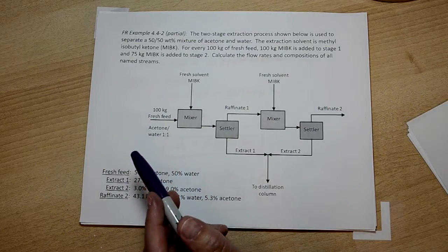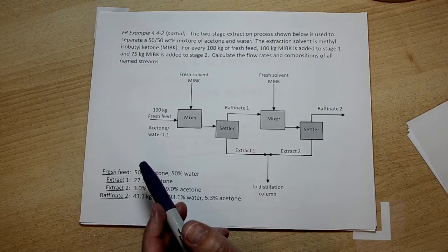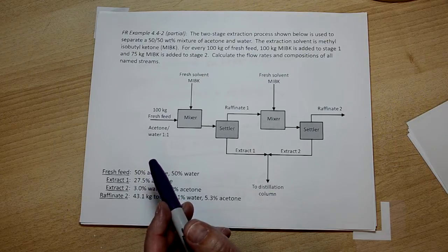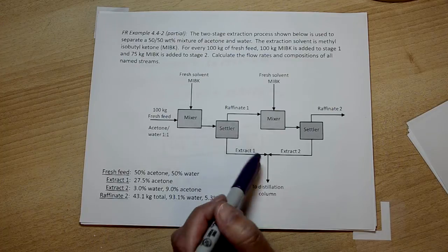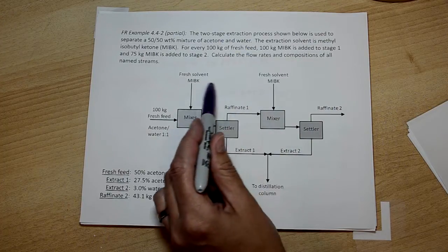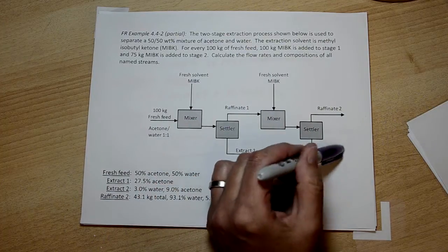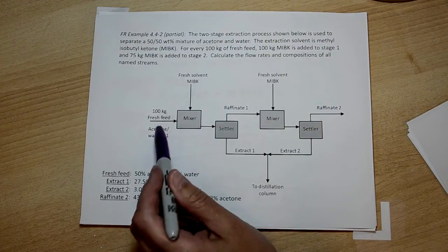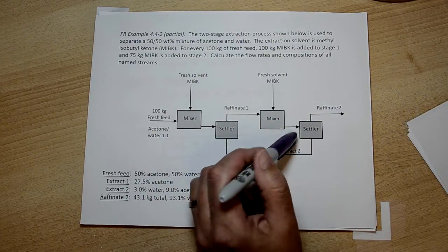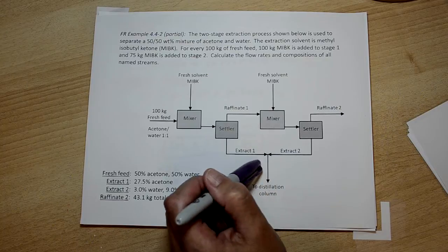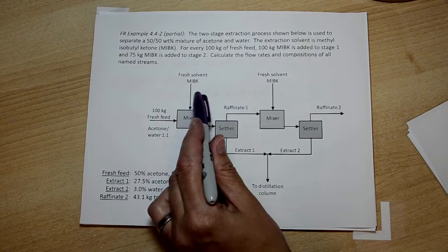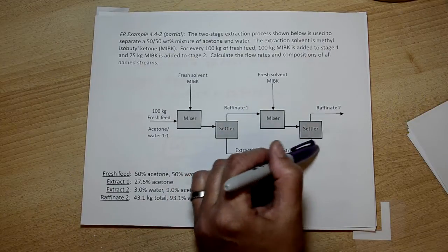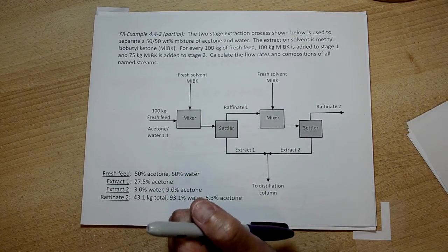So this concludes the problem. This was an example of a multiple unit process, and let's recap the strategy. The strategy was to first start with the overall mass balance to see if we could get some quick answers, and in this case we could. Going inside was a little trickier. We were forced to do two equations to unknowns, and we had to think a little bit about all the possible balances we could do before we could figure out the one we wanted.